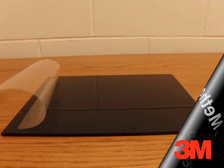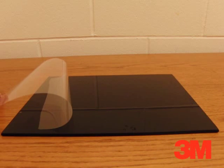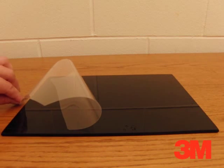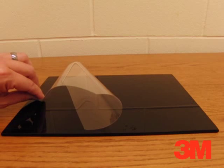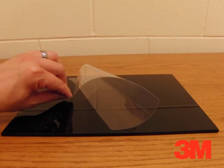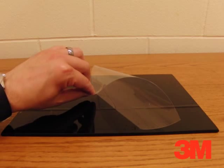For the reverse bend method, peel back a small portion of the liner and attach an edge of the adhesive to the substrate. Then bend the film to form a shape like the letter C and walk the adhesive down the substrate.